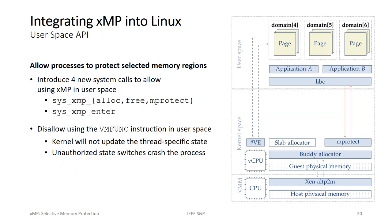We also allow user processes to protect selected memory regions. For this, we introduce four new system calls that allow processes to allocate, free, and isolate memory in XMP domains. We do not use the unprivileged VMfunc instruction in user space. Instead, we dedicate a system call — sysxmp_enter — which updates the XMP per-thread state in the kernel and only then enters the requested XMP domain. In this way, the kernel can detect unauthorized XMP domain switches on the next context switch.